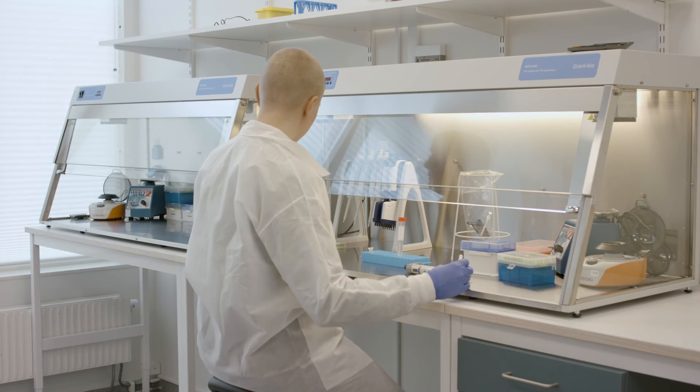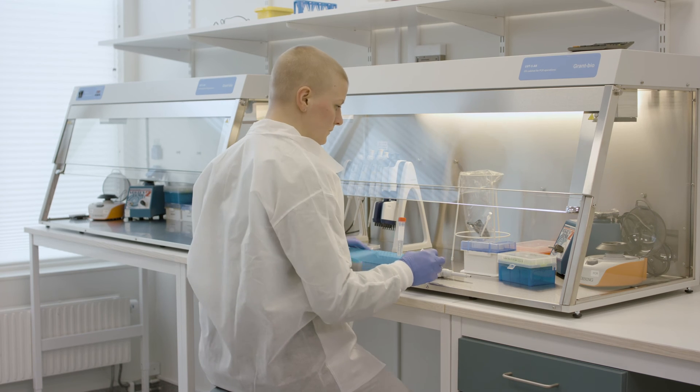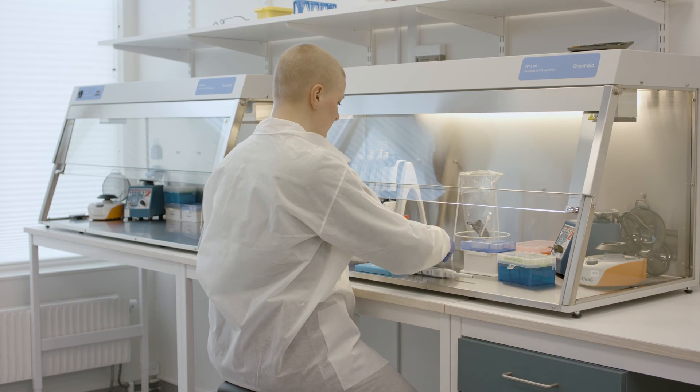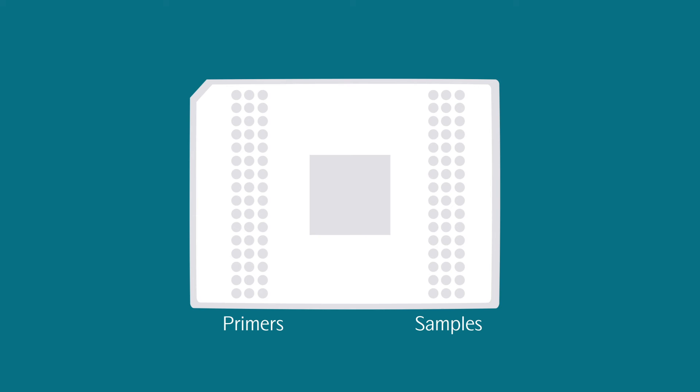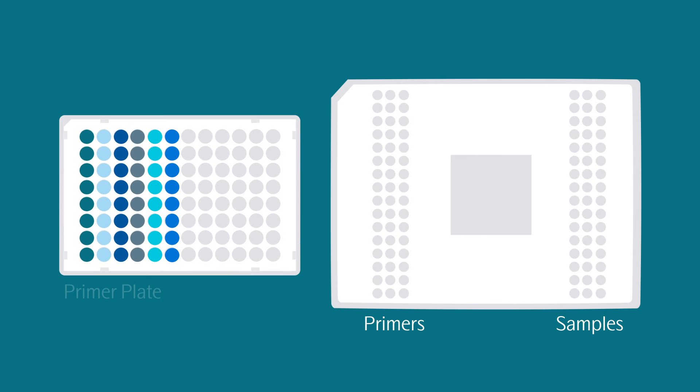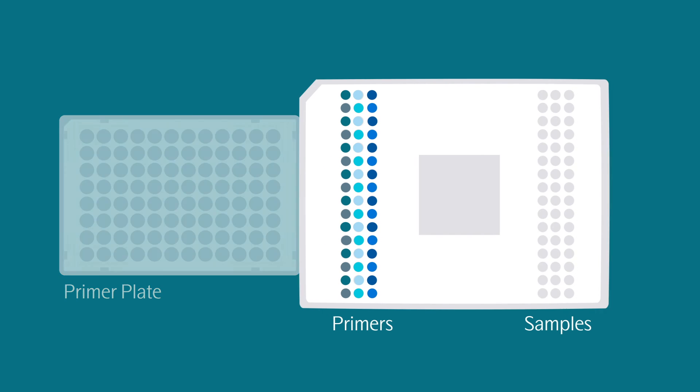The next step involves loading the primers and samples onto the Olink 4848 IFC. Using reverse pipetting, pipette 5 microliters of each primer into the respective primer inlets on the IFC on the left-hand side.